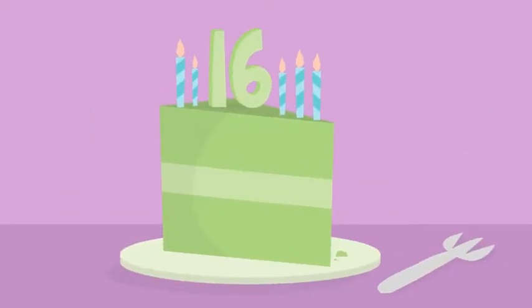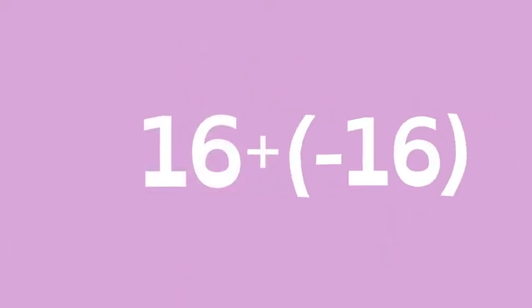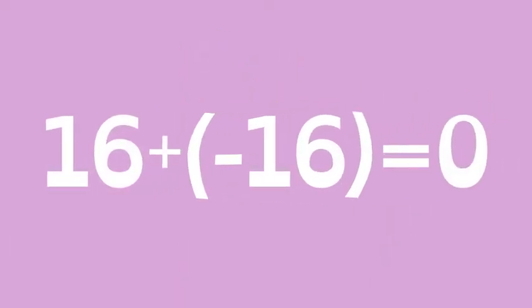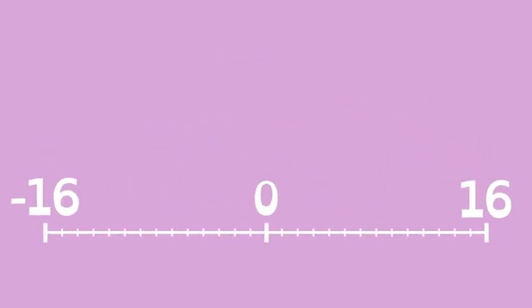Figuring out the Additive Inverse seems easy, and it is. Pick a number. The Additive Inverse of that number is the one that makes zero when added to it. Visually, this means they are equal distance away from zero on the number line.